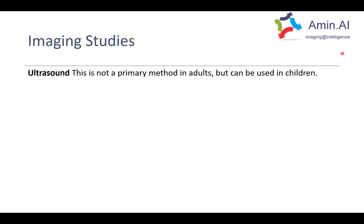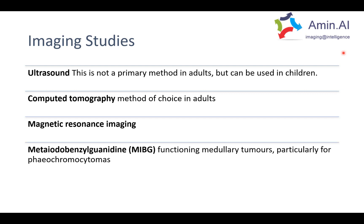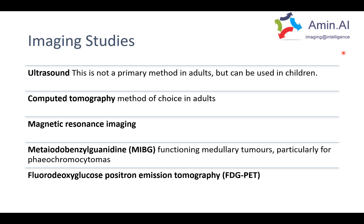Regarding imaging modalities, ultrasound is not a primary method of detection in adults but can be used in neonates. CT is the investigation of choice in adults. MRI has limitations but can be used when available. MIBG studies are used for detection of medullary tumors such as pheochromocytoma, as it is a norepinephrine analogue. FDG PET is useful for characterizing adenomas versus metastasis, which will be discussed in coming lectures.